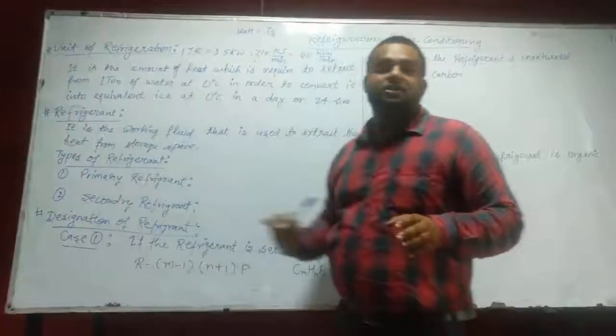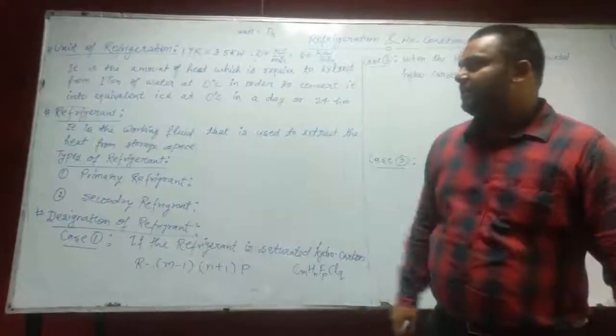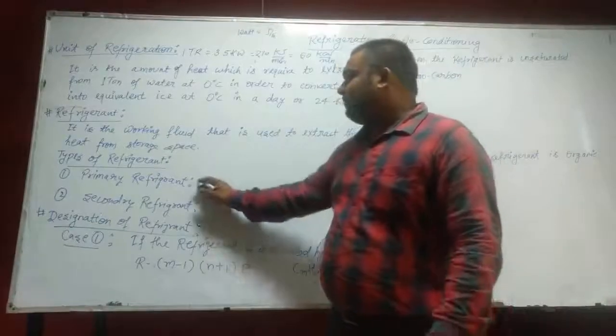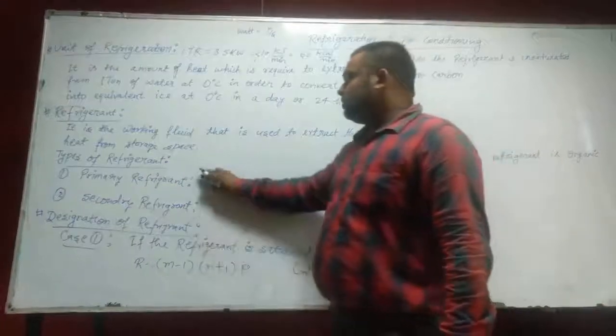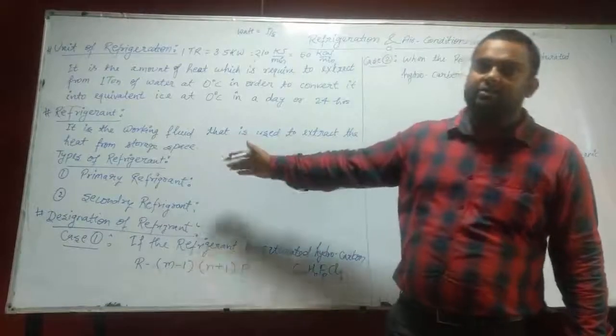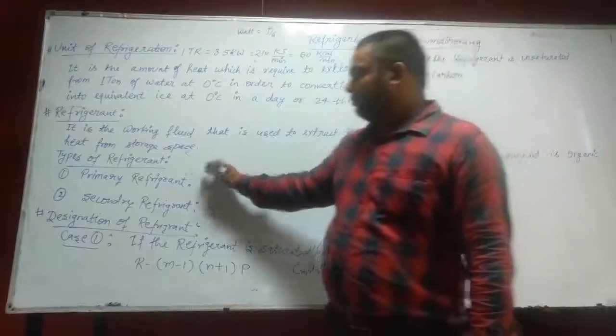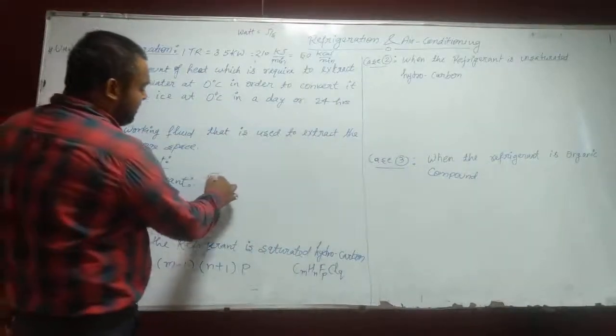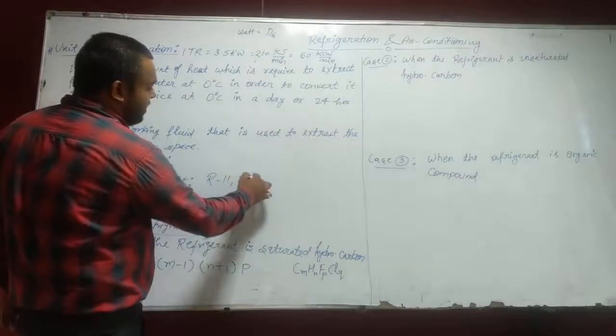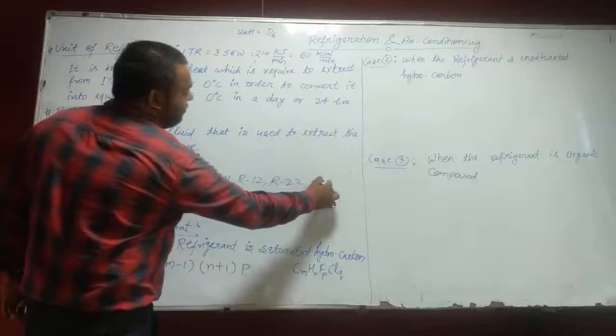There are two types of refrigerant: primary refrigerant and secondary refrigerant. Primary refrigerants are those refrigerants that are directly used in the cyclic process and provide the lower temperature. Example of primary refrigerant is generally R11, R12, R22, R134A, etc.